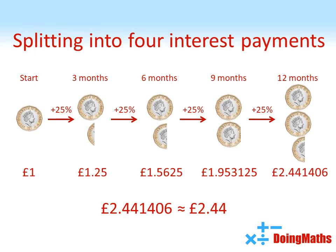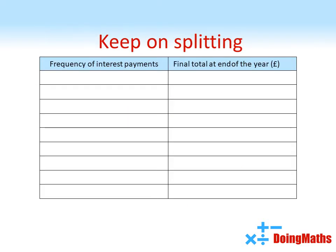Now is this going to keep happening? It seems like if we keep splitting our payments up into more and more payments — splitting that hundred percent up into more chunks, giving out more frequently — maybe this amount will keep on increasing forever. Well let's keep doing it. We've already seen that if you receive the one hundred percent payment at the end of the year, you end up with two pounds. If we split it half yearly, you get two pound twenty five, and if you split it into four quarterly payments, you get just over two pound forty four. But let's keep splitting this.